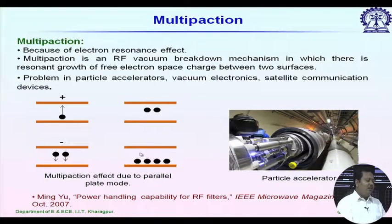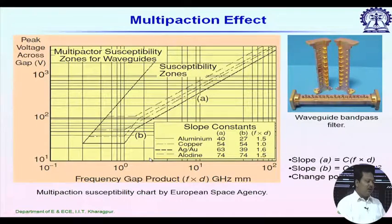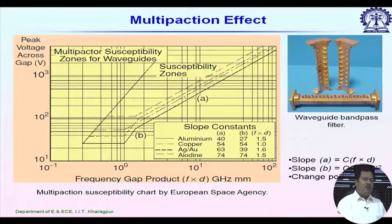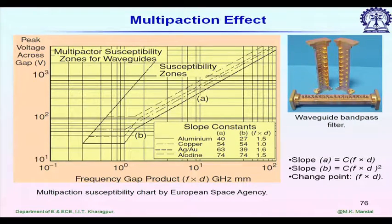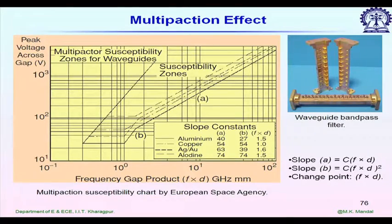How to predict multipaction, or what is the threshold voltage needed for multipaction? It is really difficult to calculate the multipaction threshold voltage because it depends on many factors — the type of metal, the secondary emission threshold energy needed for secondary emission, the surface of the metal, and the presence of any other molecules inside the rectangular waveguide structure.